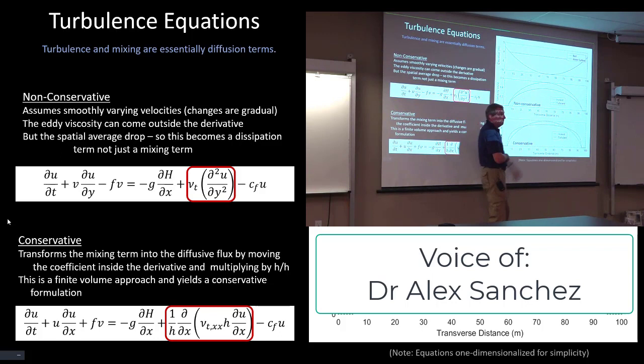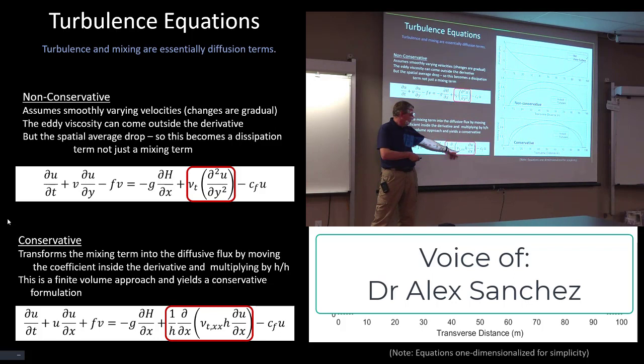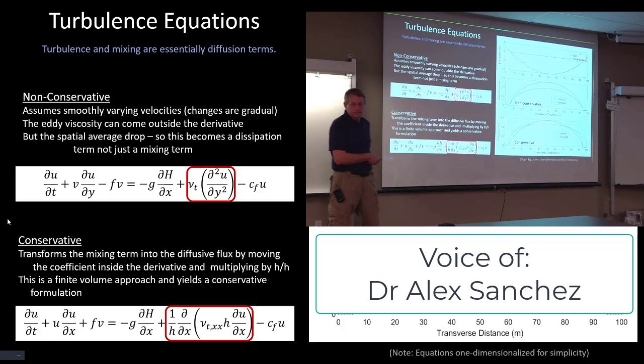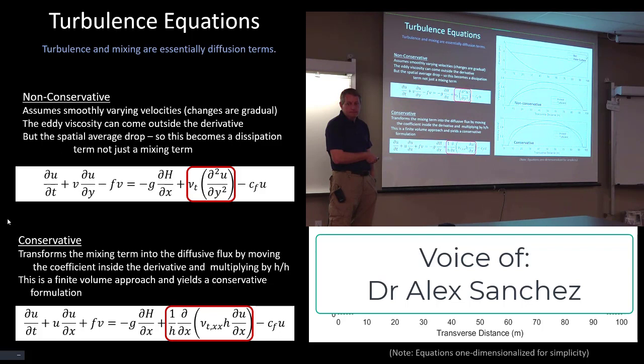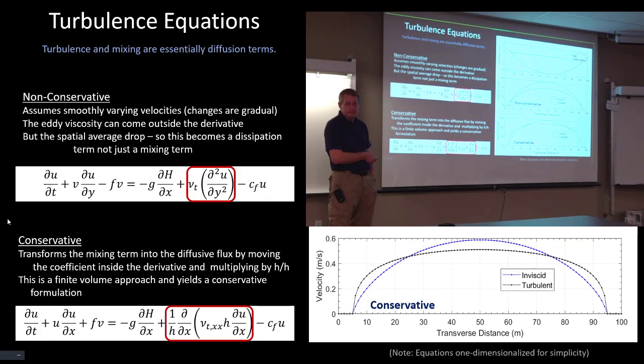Whereas in the other formulation, that's a diffusive flux. And the way it's computed is, let's say out of phase, you remove some momentum from one cell, and you add that momentum to the next cell. And it's exact. It's finite volume. And so we're adding and subtracting momentum instead. And that's much more conservative. And so that's conservative formulation.